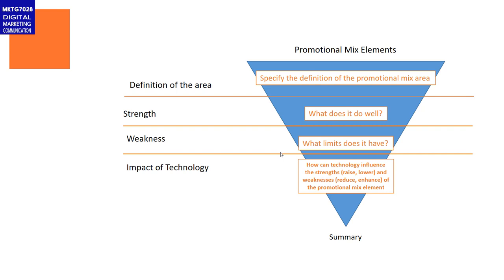Phase two: Strengths. What does it do well? This is, again, research-led. You need citations. You need references. Use the academic materials. You've got access to textbooks, journal articles, and Google Scholar. Use the assets — make use of them. Tell us what it does well, with support from evidence, argument, and academic papers.